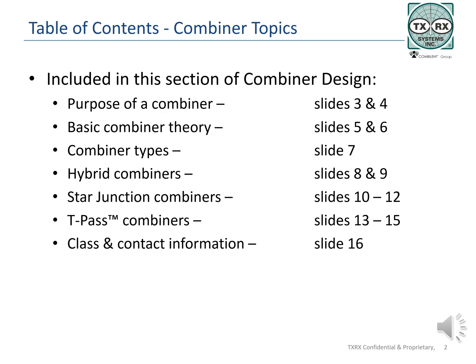Slides 3 and 4 will discuss the purpose of a combiner. Slides 5 and 6 will cover basic combiner theory. Slide 7 is a summary of combiner types. Slides 8 and 9 discuss hybrid combiners. Slides 10 through 12 have information about star junction combiners. Slides 13 through 15 cover T-PAS combiners. Slide 16 has more information about additional training and contact information.